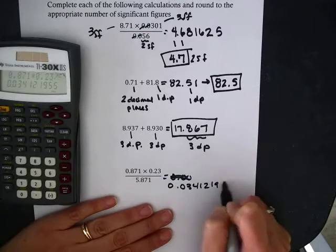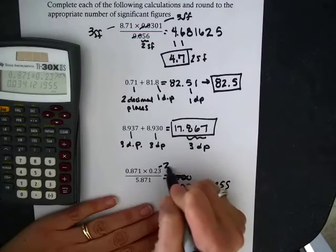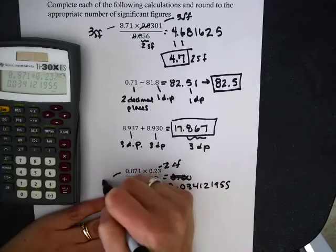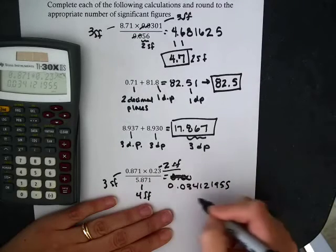Write it all out. Now I'm back to sig figs because it's multiplication and division. 2 sig figs, that 0 in front doesn't count. 4, and then 3 because that 1 in front doesn't count.